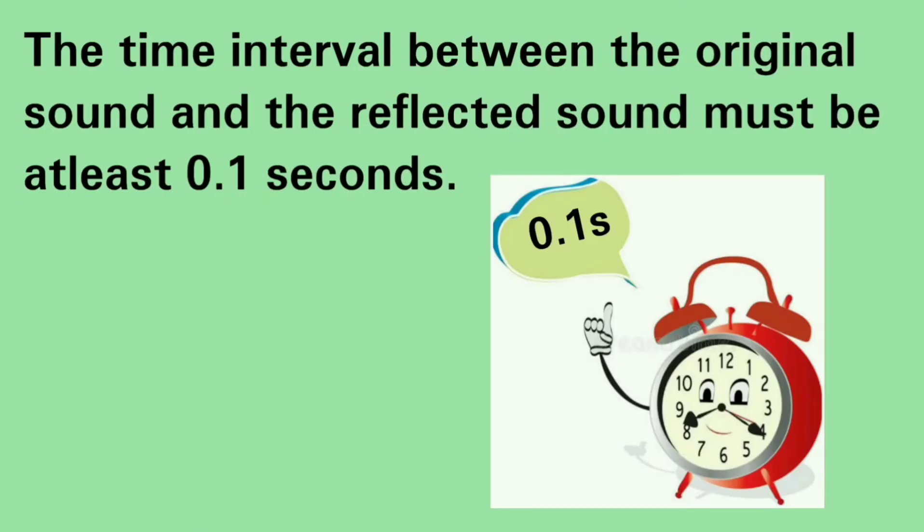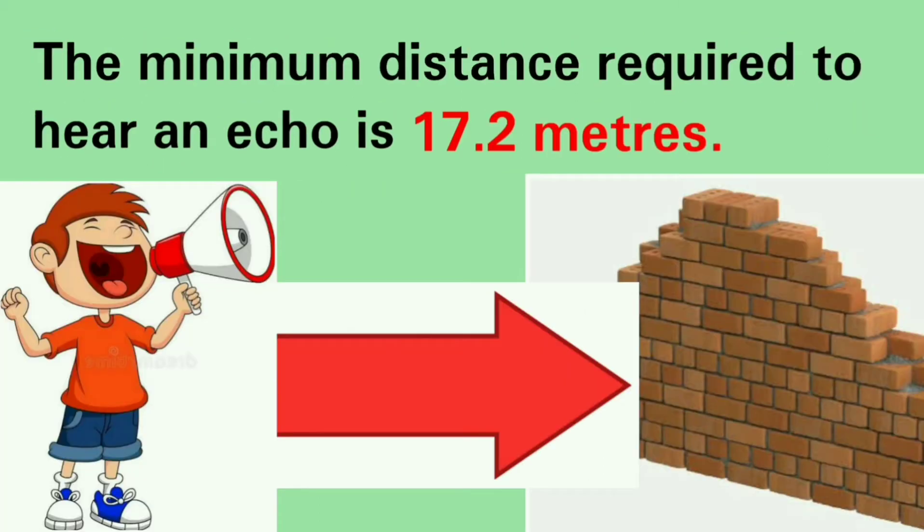What are the conditions required to hear an echo? The first condition required to hear an echo is the time interval between the original sound and the reflected sound must be at least 0.1 second. Then only you will be able to hear a distinct echo. The second condition is the distance from the original sound and the surface which reflects the sound should be at least 17.2 meters.